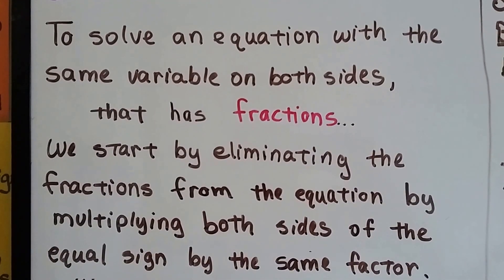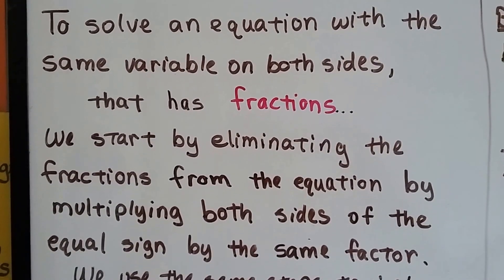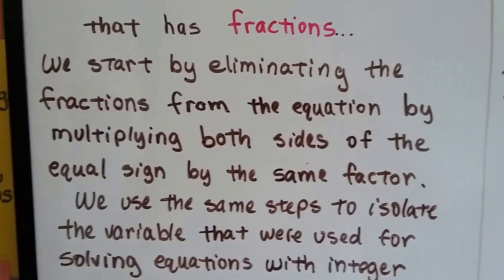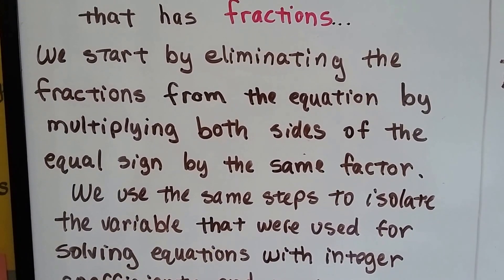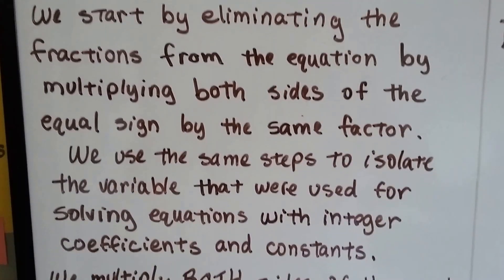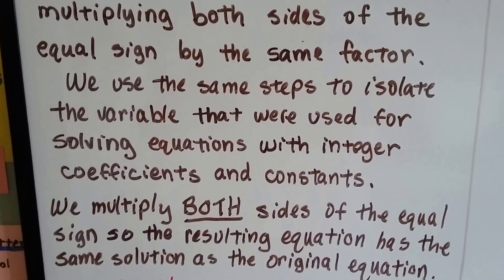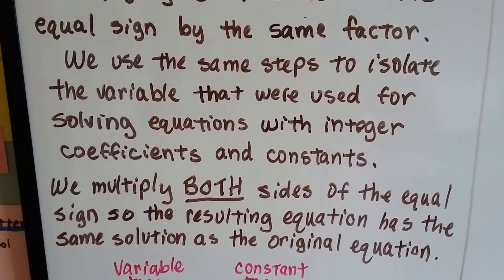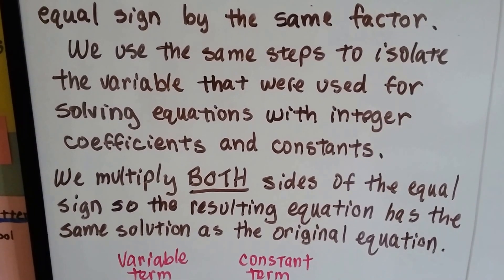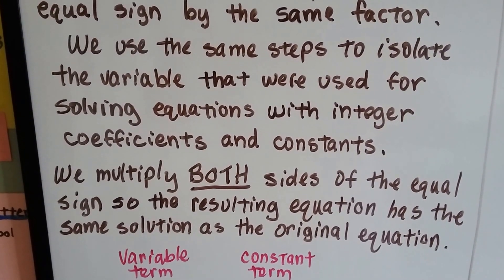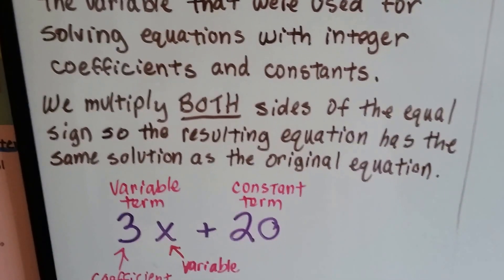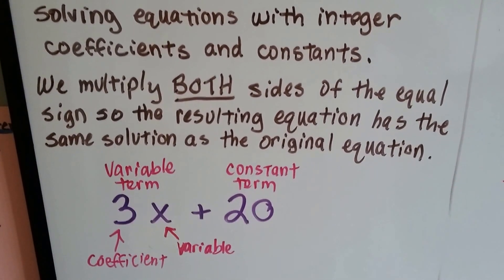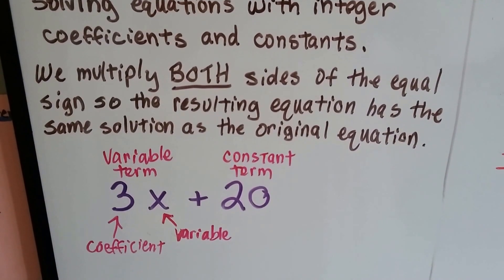To solve an equation with the same variable on both sides that has fractions, we start by eliminating the fractions from the equation. We multiply both sides of the equal sign by the same factor. We use the same steps to isolate the variable that were used for solving equations with integer coefficients and constants. We multiply both sides of the equal sign so the resulting equation has the same solution as the original equation.